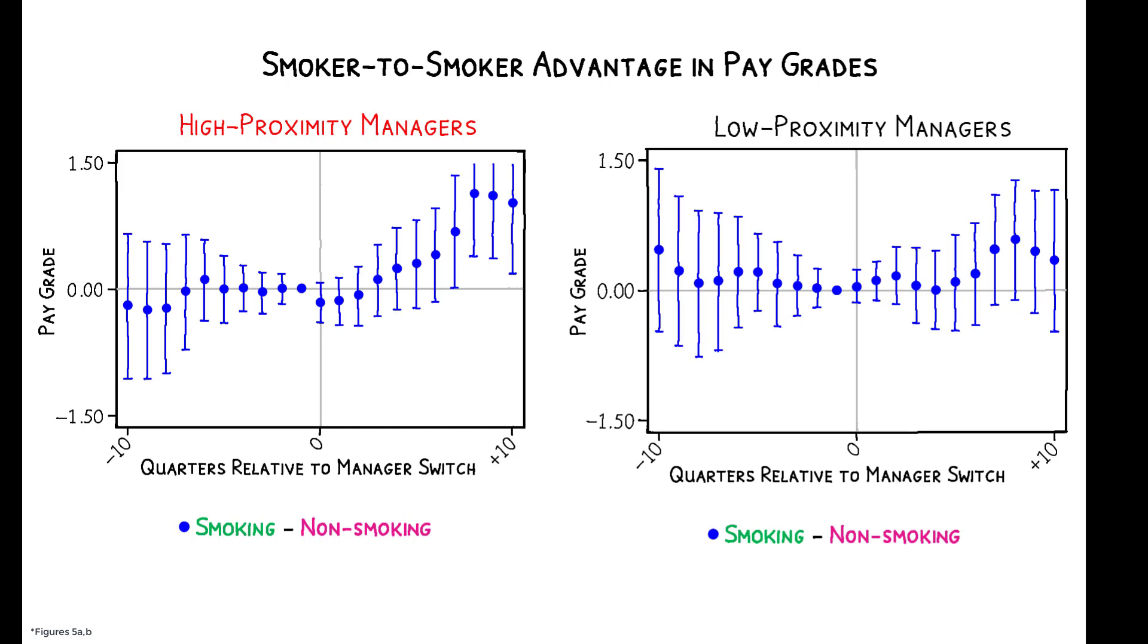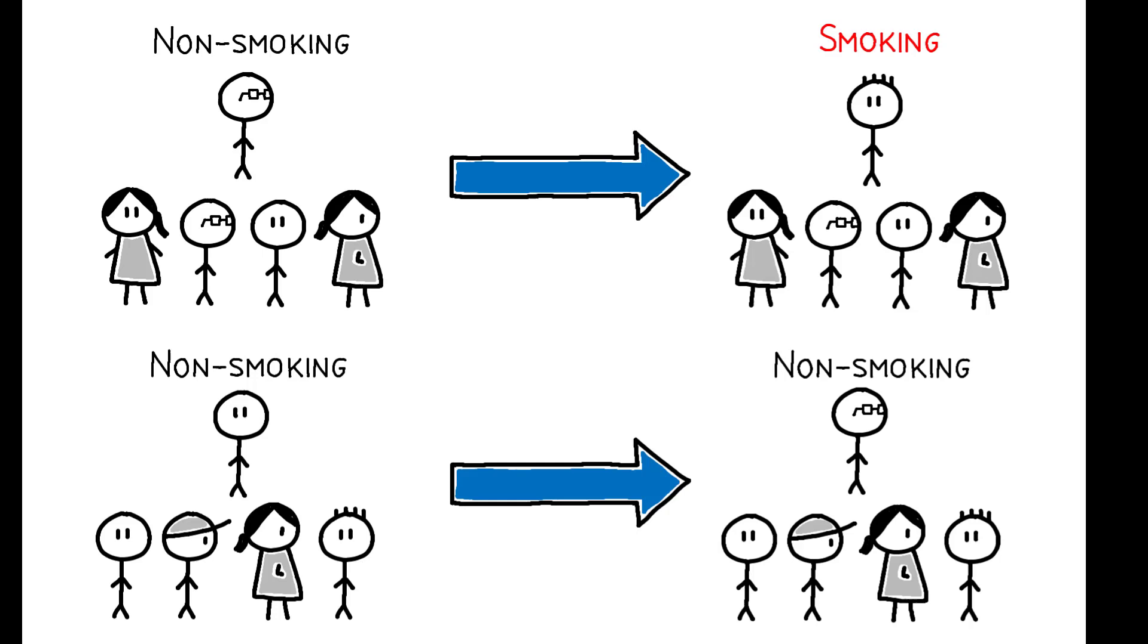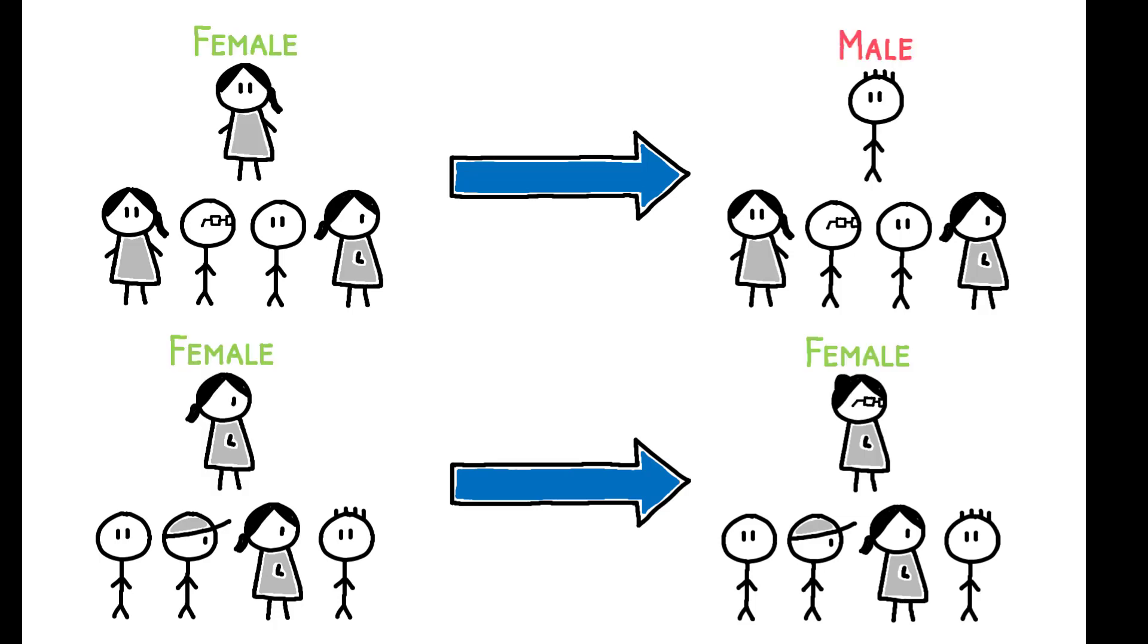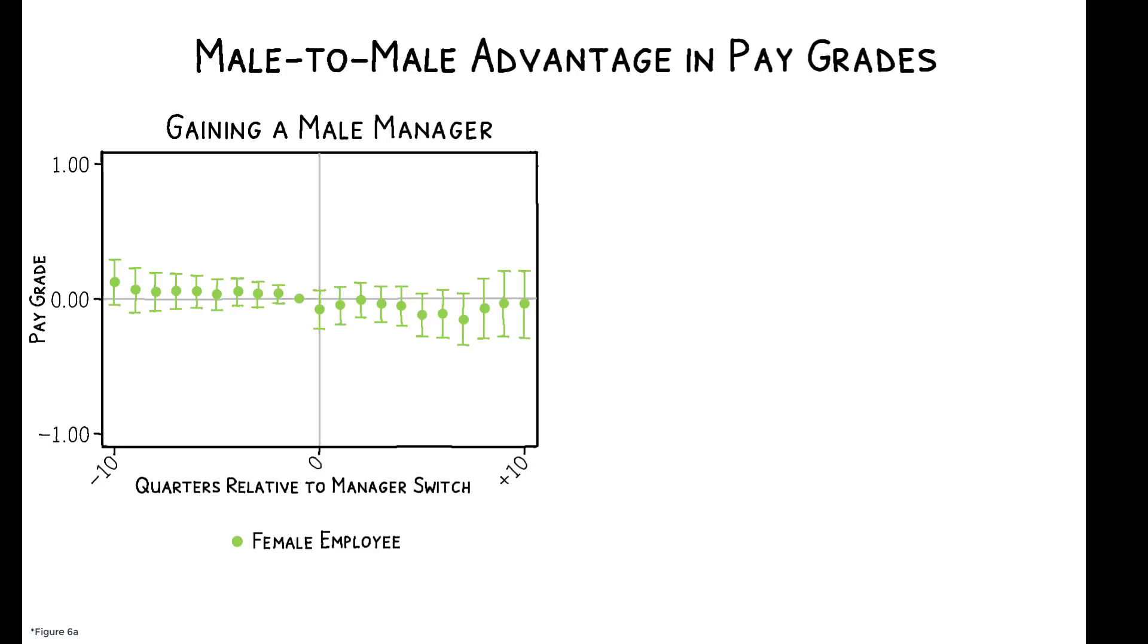To determine whether similar dynamics contribute to the gender pay gap, the authors apply the same analytical framework, but rather than measuring the smoker-to-smoker advantage, they estimate the male-to-male advantage. They find that while the pay grades of female employees evolve similarly regardless of whether they transition to a female or male manager, the pay grades of male employees rise more quickly with a male manager.